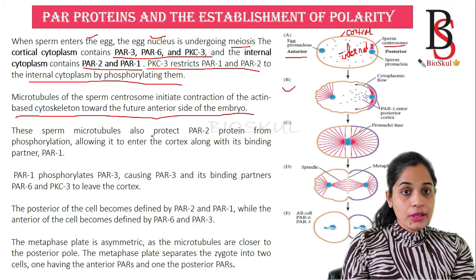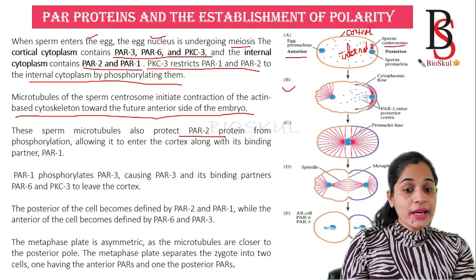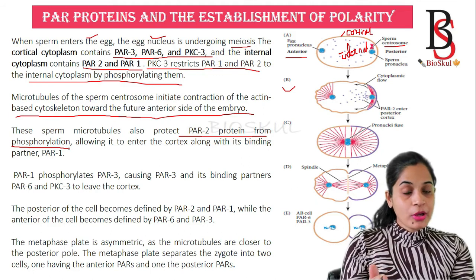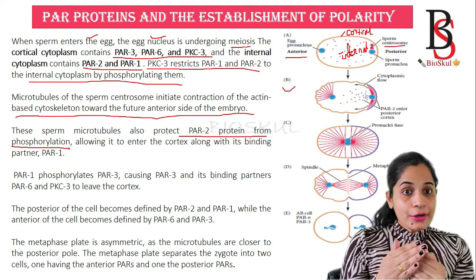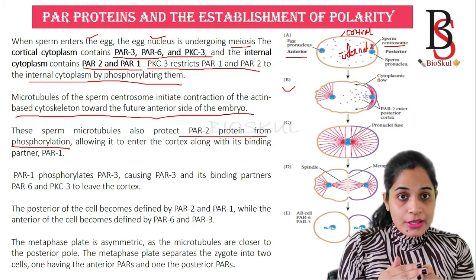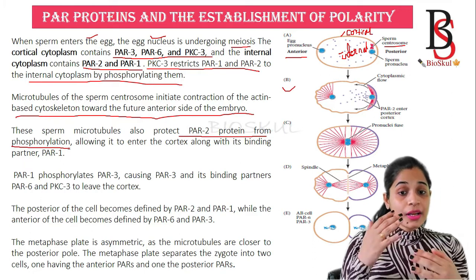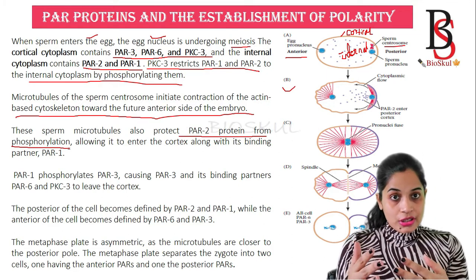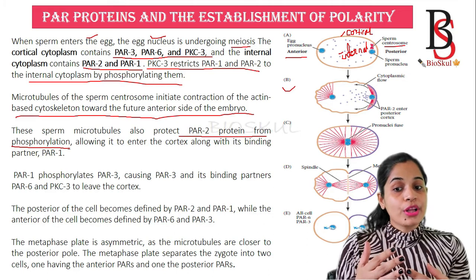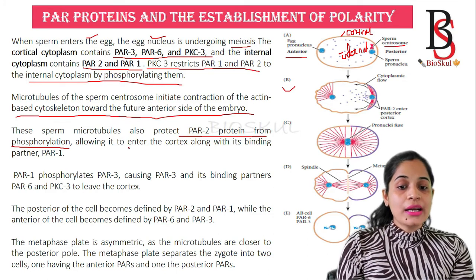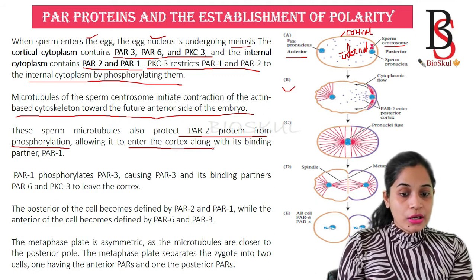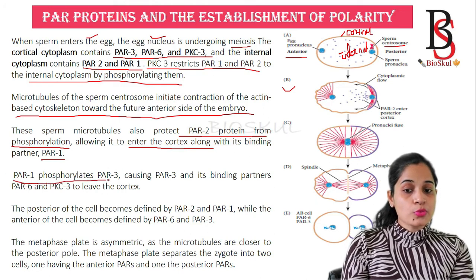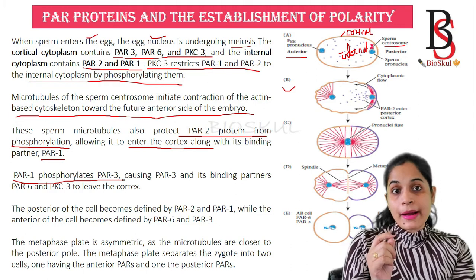The sperm microtubule also protects the PAR-2 protein from phosphorylation by PKC-3, since PKC-3 normally phosphorylates PAR-2 and restricts its entry into the cortex. So the sperm centrosome not only initiates contraction of the actin-based cytoskeleton toward the anterior side, but also protects PAR-2 from phosphorylation, allowing it to enter the cortex along with its partner PAR-1.